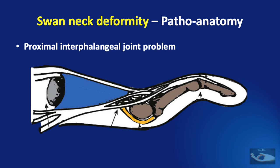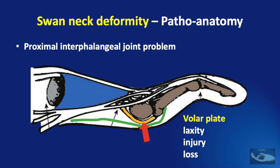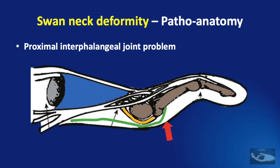Now let us understand how a proximal interphalangeal joint problem can cause a swan neck deformity. There are two forces that counteract the extension force at the proximal interphalangeal joint: the volar plate and the flexor digitorum superficialis. When the volar plate is weakened — as in conditions like laxity, injury, or loss — the forces of extension become stronger at the proximal interphalangeal joint. Similarly, when the force of flexion provided by the flexor digitorum superficialis is lost by injury or removal at surgery, the extension force at the PIP joint becomes stronger.